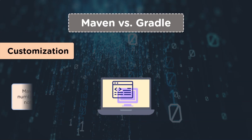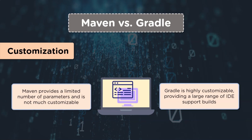The fifth pointer is customization. Maven provides a limited number of parameters and resources. It can serve a limited number of developers and is not very customizable, though this also makes Maven easier to understand and configure. Whereas Gradle is a highly customizable tool and provides a large range of IDE support builds. Gradle can also be used for native development with C or C++.